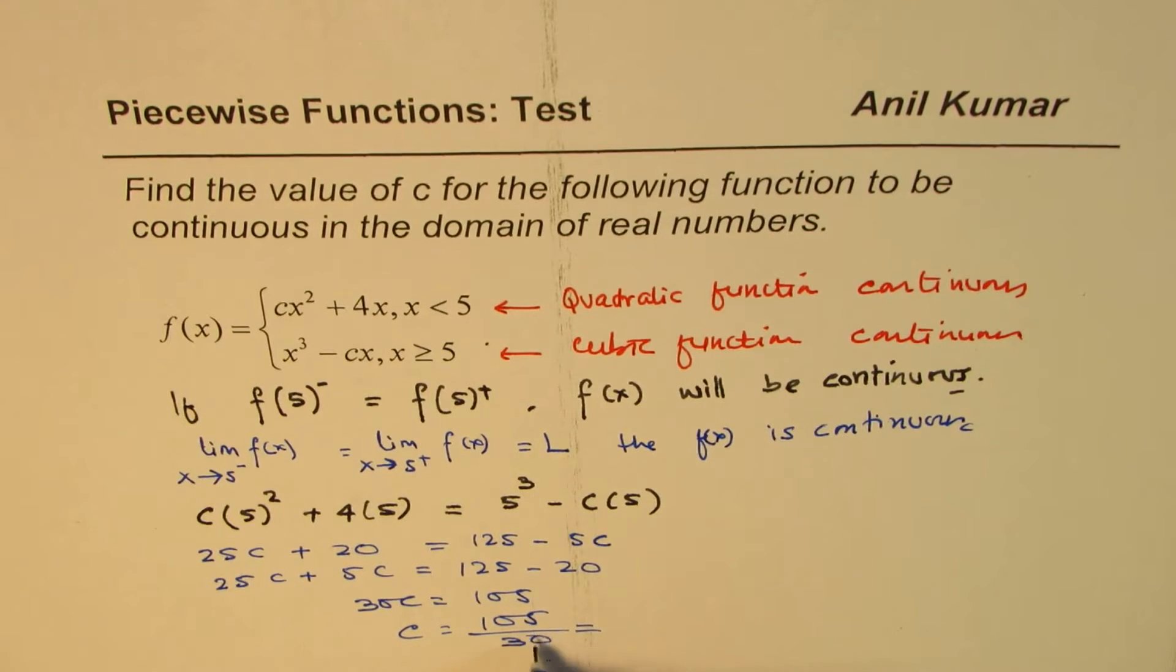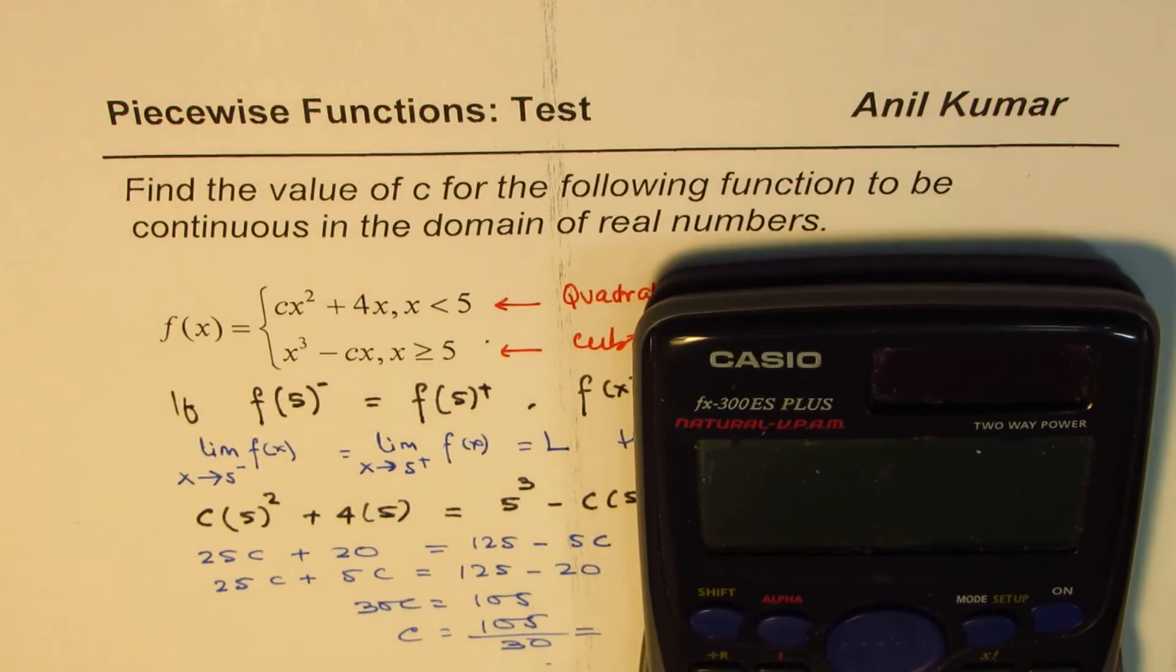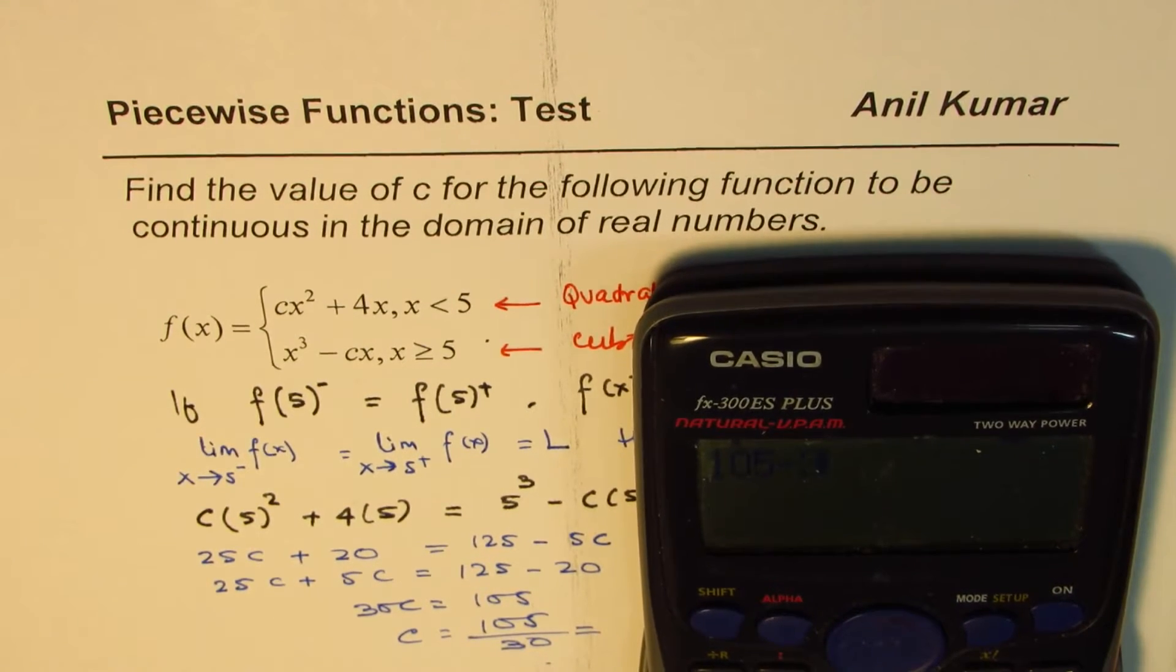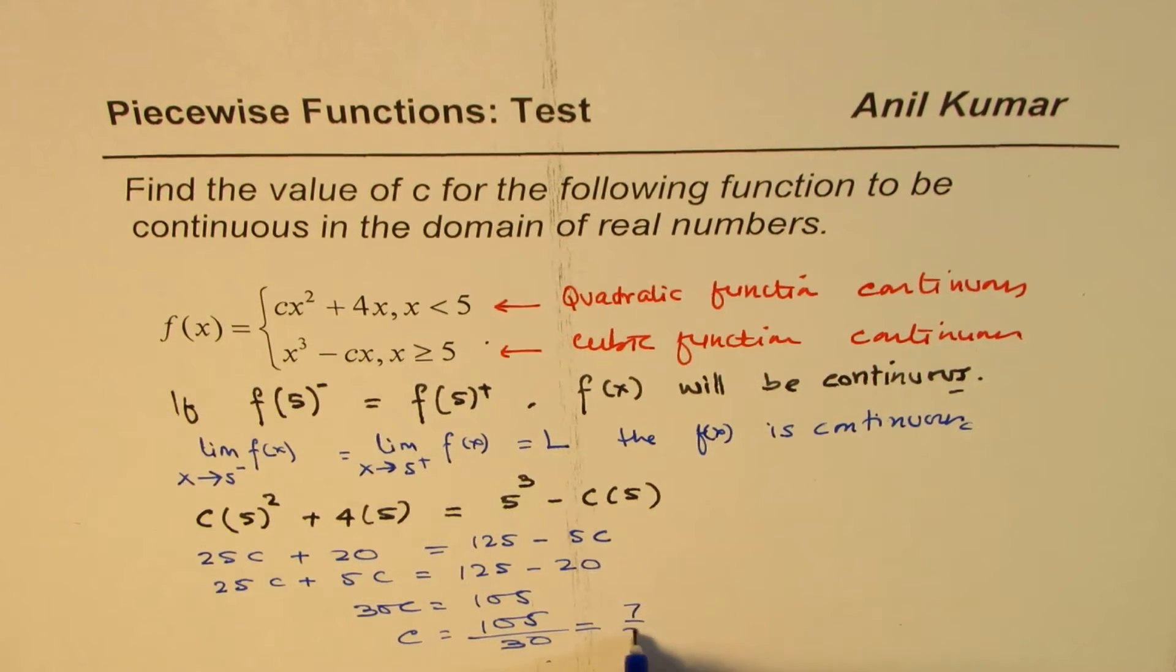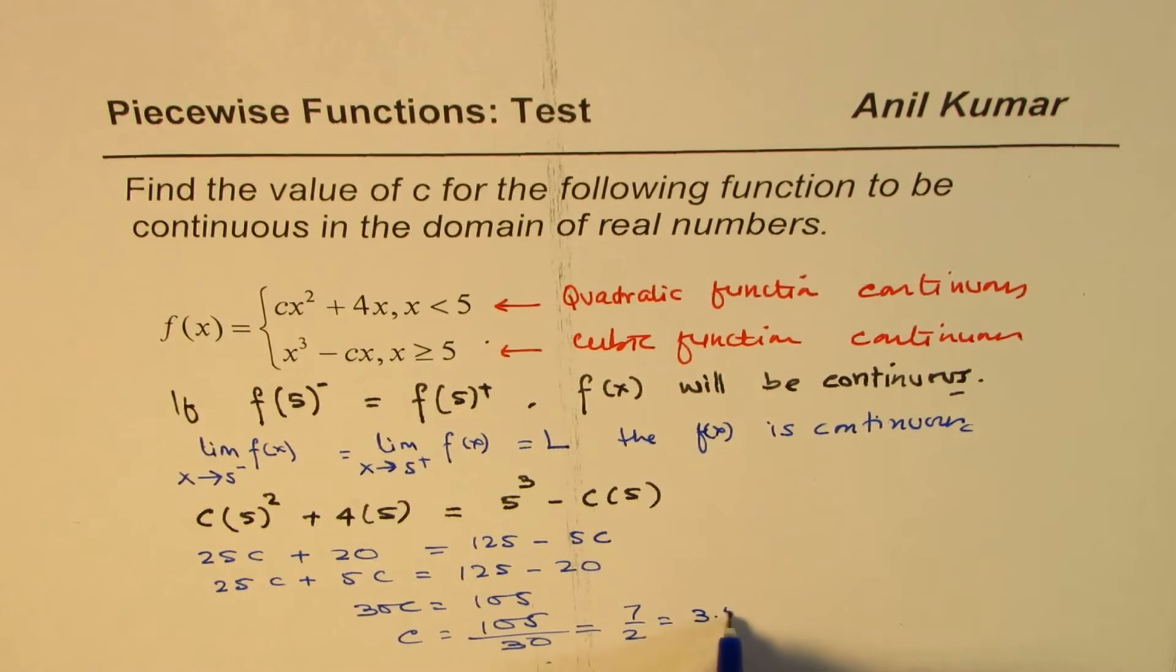So that gives me one decimal. Well, you can use the calculator, no problems. So 105 divided by 30 gives you 7 over 2, or in decimals 3.5.